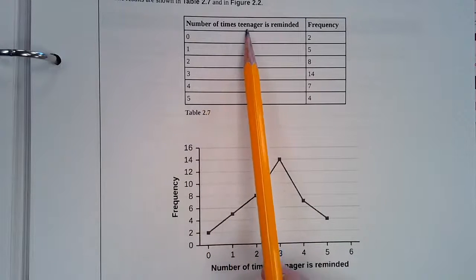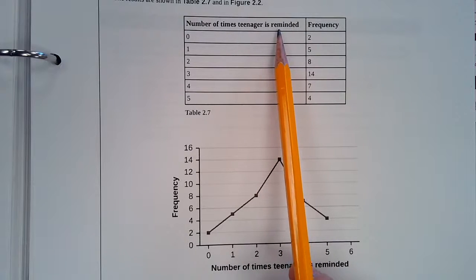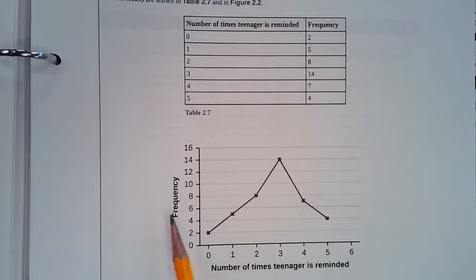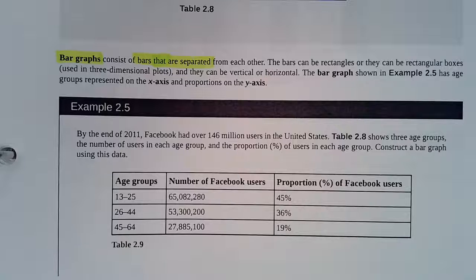So basically what we do with the frequency table is we just put it into a graph. And now notice the same way that you label your columns in a frequency table, you label your axes on your line graph. So the x-axis is the number of times teenager is reminded and the y-axis is the frequency that that occurs. So we only had two times where a teenager didn't need to be reminded at all. So this is our frequency table and this is our line graph.